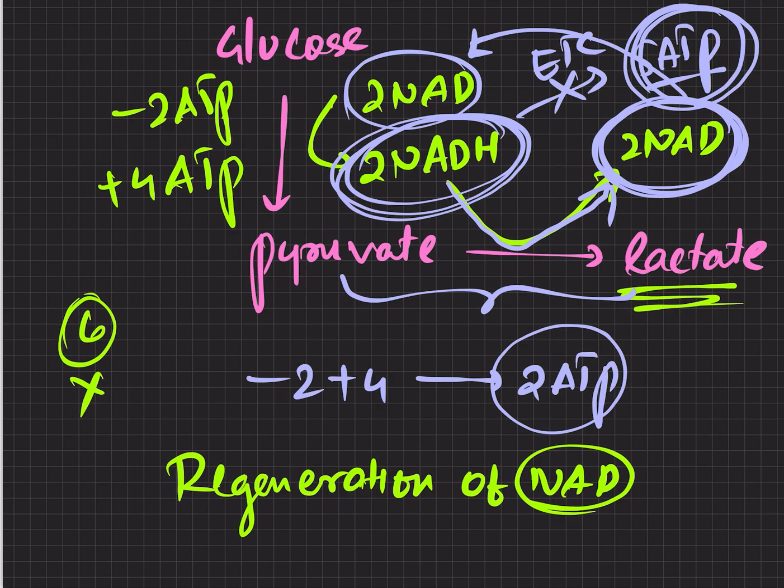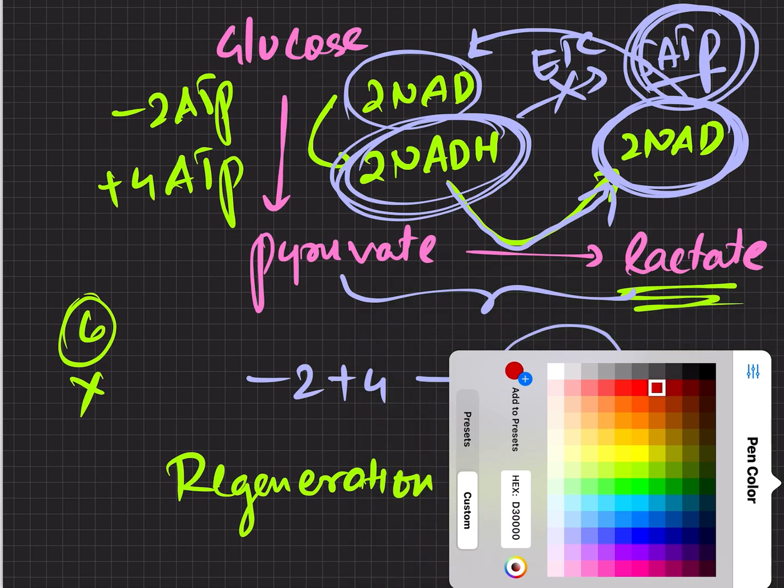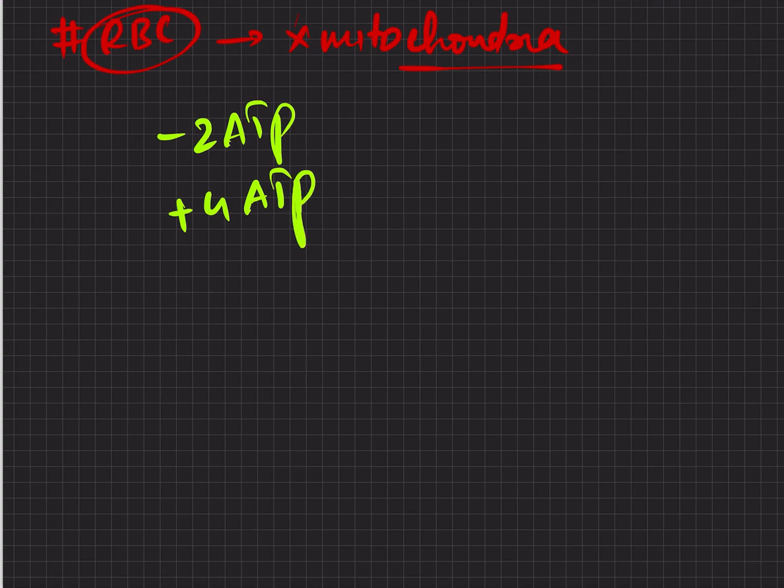We have seen aerobic conditions, we have seen anaerobic conditions. Now let us talk about RBC. What is the specialty of RBC? It will not have mitochondria. Simple thing, it has no mitochondria.